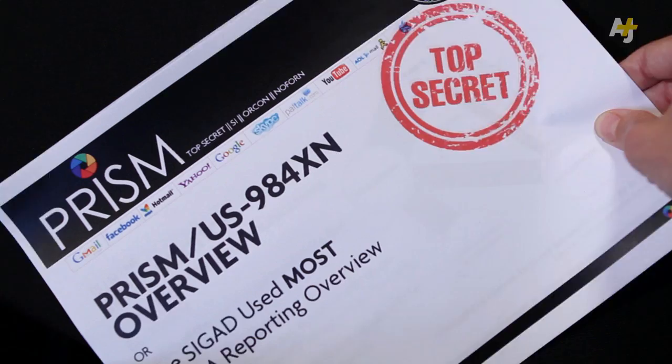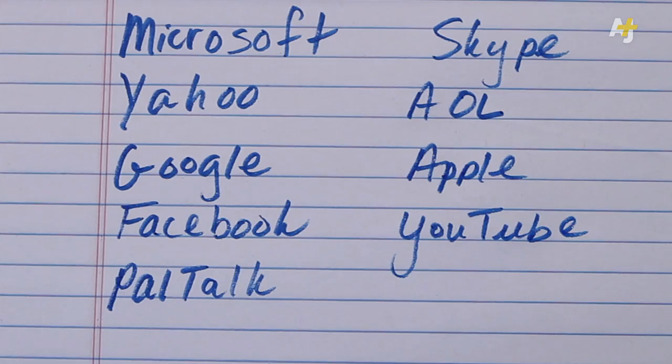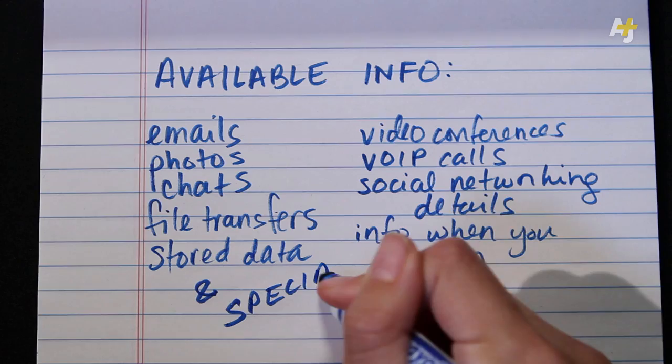The presentation touts PRISM as the program used most by the National Security Agency when it comes to collecting raw information. Apparently, the NSA can gather data from a few Internet and tech companies you might have heard of. What kind of data exactly? Pretty much everything.